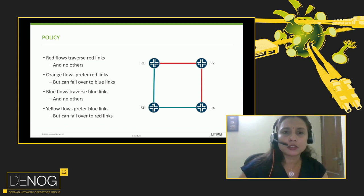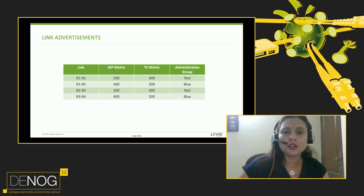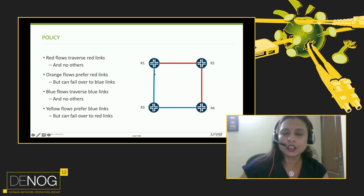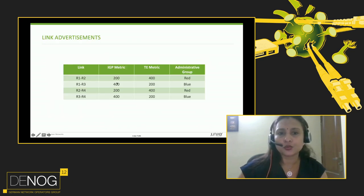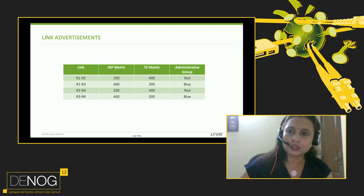Let's see using Flex Algo how this can be achieved. We have two kinds of metric: IGP metric and TE metric, and we have administrative groups. The IGP metric for red links is 200 and for blue links is 400. The TE metric is 200 for the blue links and 400 for the red links. The administrative groups have been assigned accordingly: all red links have the red administrative group and blue links have the blue administrative group. These link attributes get advertised in ISIS or OSPF.